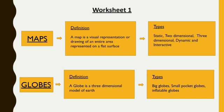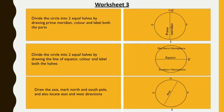Next, page number 8 — that is 'Match it with the images.' You have to do it at home. Next, Worksheet 3. In this you have to draw the lines and mark the directions. Look at the first question: divide the circle into two equal halves by drawing the prime meridian, color it, and label both parts. In the circle, draw the line of the prime meridian and mark the north, south, east, and west directions.